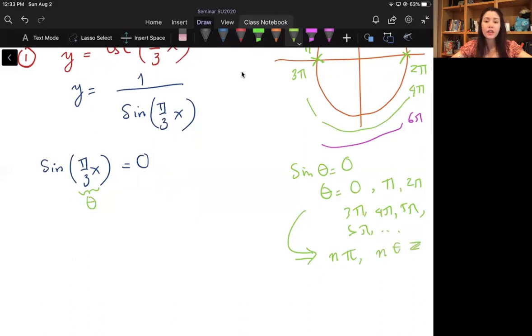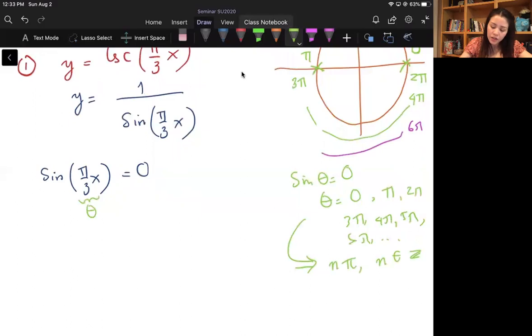Where n is your integer. It could be negative 3, negative 2, negative 1, 0, 1, 2, 3, etc. So I know that sine theta equals zero when theta is equal to nπ, or better yet, π over 3x is equal to nπ.